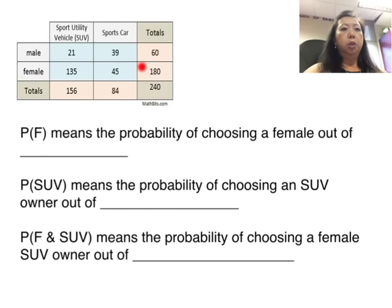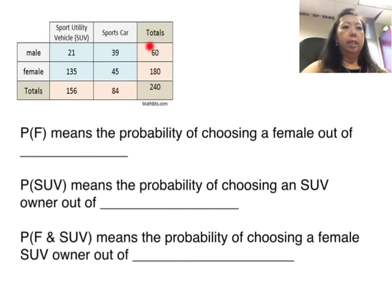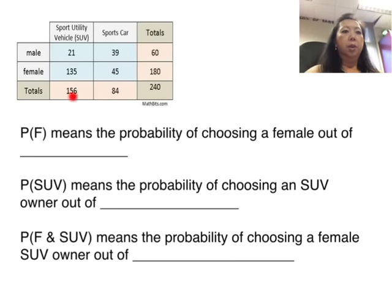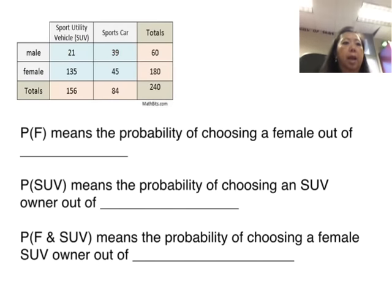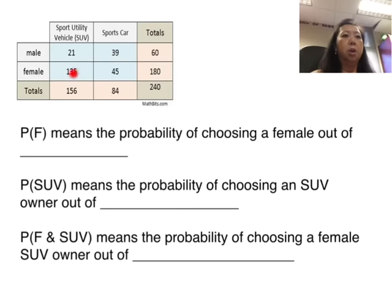Here we have 240 people in total: 180 are females and 60 are males. 156 are SUV owners and 84 are sports car owners. 21 males own an SUV, 39 males own a sports car, 135 females own an SUV, and 45 females own a sports car.